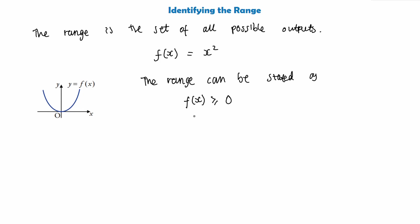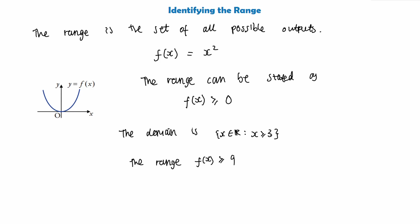However, the range could also depend on the choice of domain. For example, if we're given this function and told that the domain of f of x is x being any real number but x must be greater than or equal to 3, then the range would be f of x greater than or equal to 9. This is because the lowest value x can be is 3, and 3 squared is 9, so any value of x will give a number greater than or equal to 9.